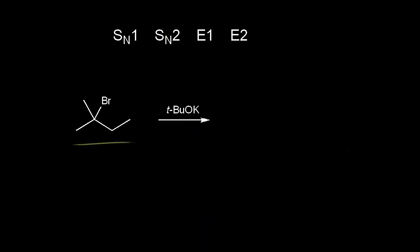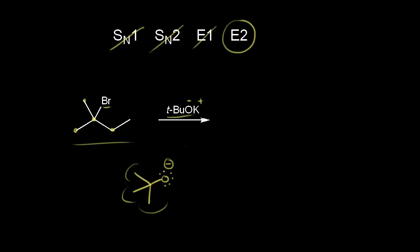Looking at the substrate again: this is a tertiary alkyl halide — the carbon directly bonded to the halogen is bonded to three other carbons, so SN2 is immediately out. The reagent is potassium tert-butoxide, which is too sterically hindered to function as a nucleophile, so SN1 is out. Potassium tert-butoxide is also a strong base, so E1 is out. That leaves an E2 mechanism.